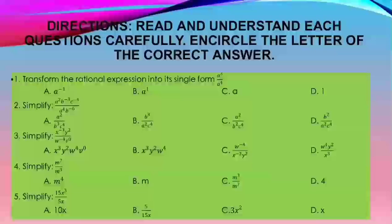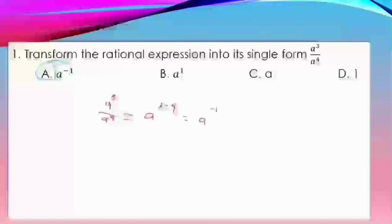Let's check your work. Number 1: Our answer is letter A, a to the power of negative 1. The solution is a to the power of 3 divided by a to the power of 4 equals a to the power of 3 minus 4. And 3 minus 4 is negative 1. That is why the answer is a to the power of negative 1.